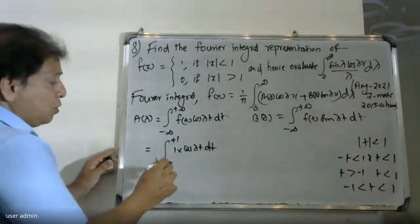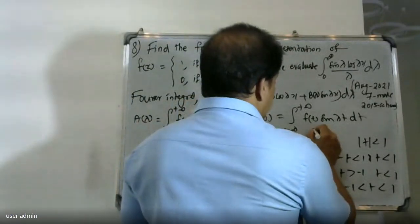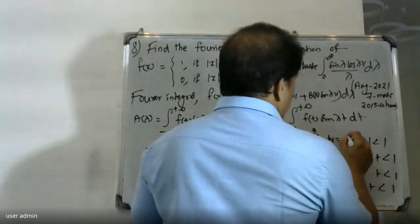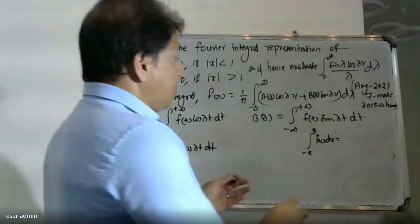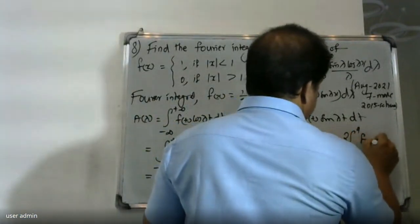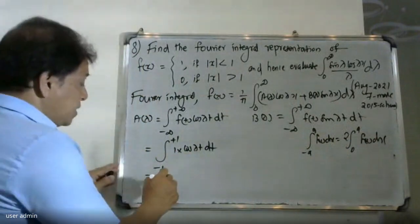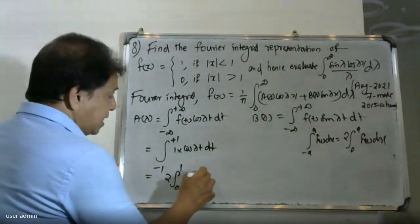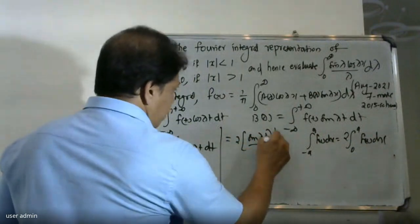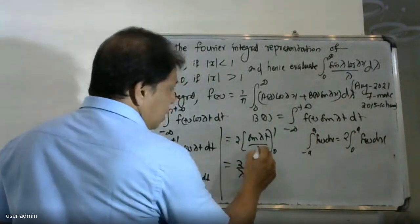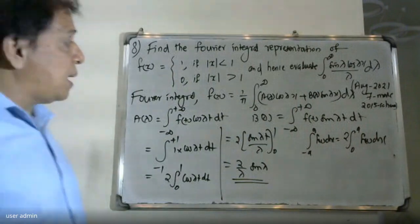Since cos(lambda t) is an even function, we can use the even function property: integral from minus a to a of f(x) dx equals two times the integral from zero to a of f(x) dx. Therefore A(lambda) equals two times the integral from zero to one of cos(lambda t) dt, which equals two times sin(lambda t) divided by lambda, evaluated from zero to one, giving two sin(lambda) divided by lambda.